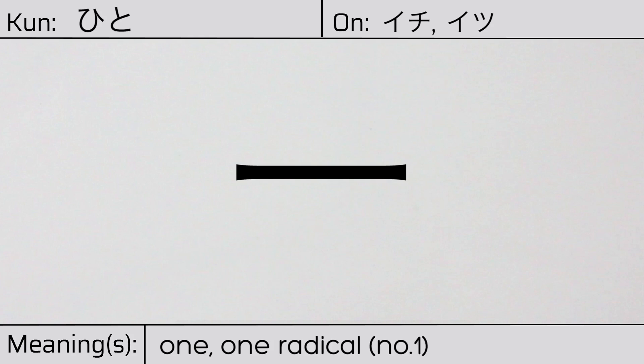Welcome to this lesson on Japanese kanji. Today, we'll be discussing this character. This kanji has a kunyomi or Japanese reading of hito, and it has an onyomi or Chinese reading of ichi. This character has the meanings one or the one radical. Here is the stroke order.